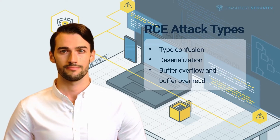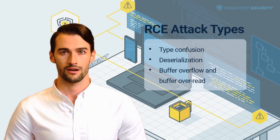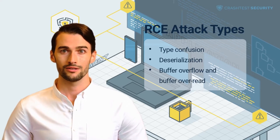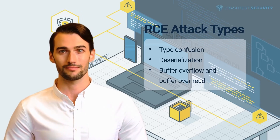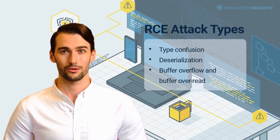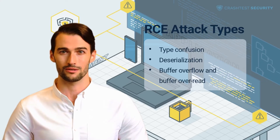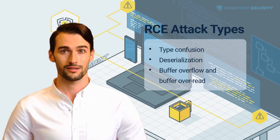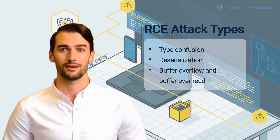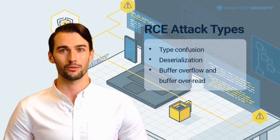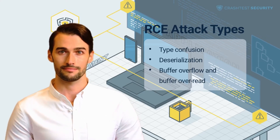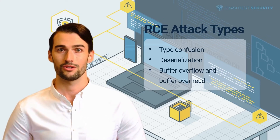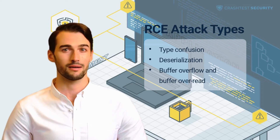Type confusion: this type of vulnerability is when an object, resource, or variable is allocated using one type but is then accessed using another different from the initial one. This results in a bug and logical errors due to the mismatch in the type and properties of the accessed resource. Attackers exploit this vulnerability by including code in an object allocated with one pointer but read with another. The result is that the second pointer triggers the injected code. For example, an SQL injection can be due to type confusion in some cases.